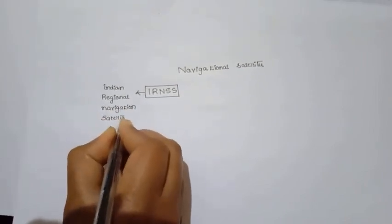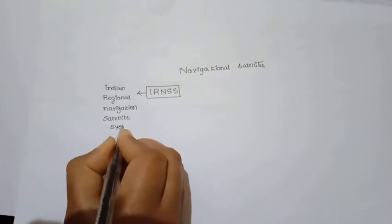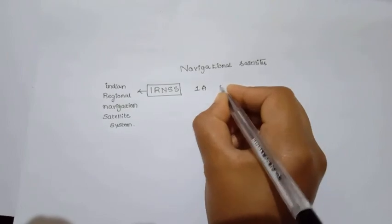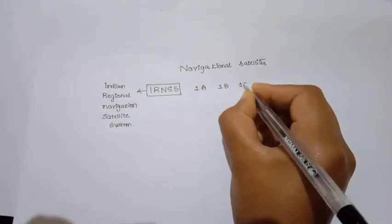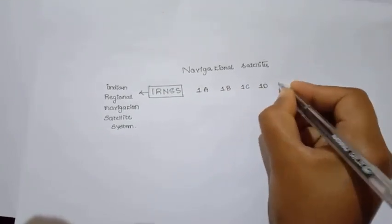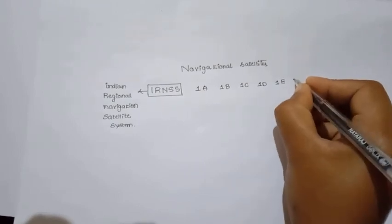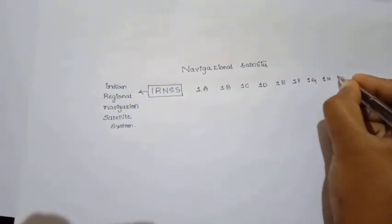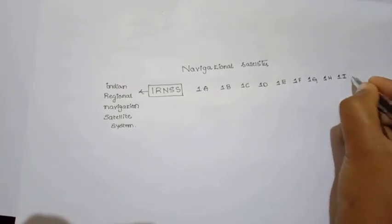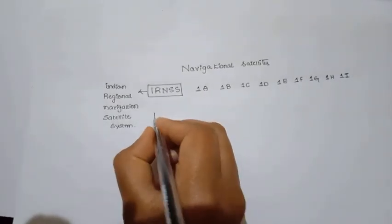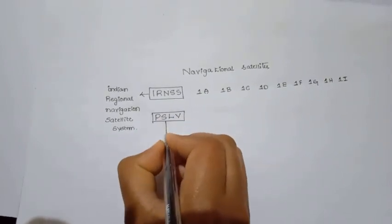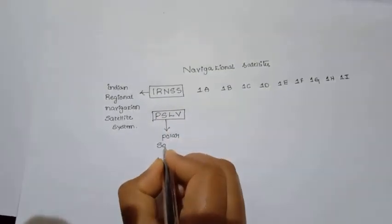The first navigation satellite is IRNSS-1A, and the ninth navigation satellite is IRNSS-1I. PSLV series means Polar Satellite Launch Vehicle.